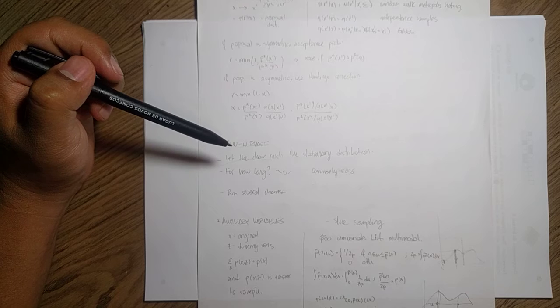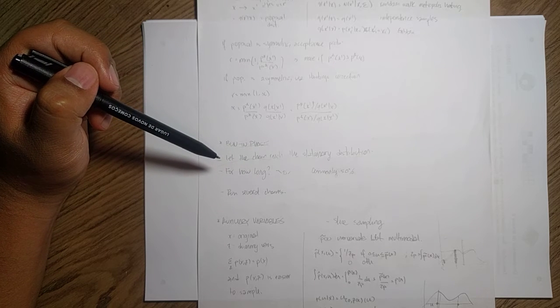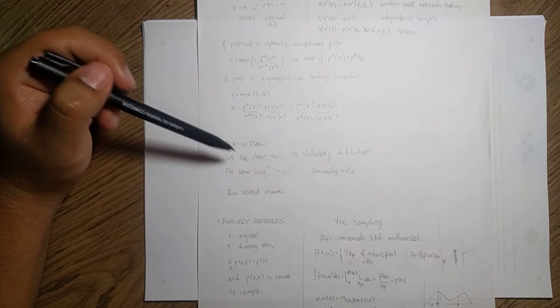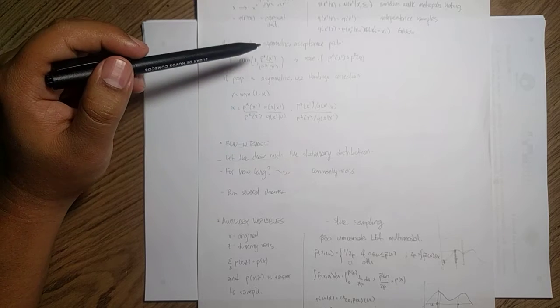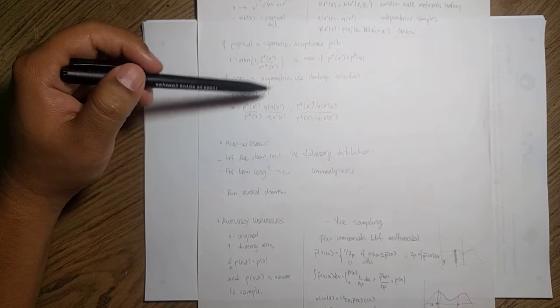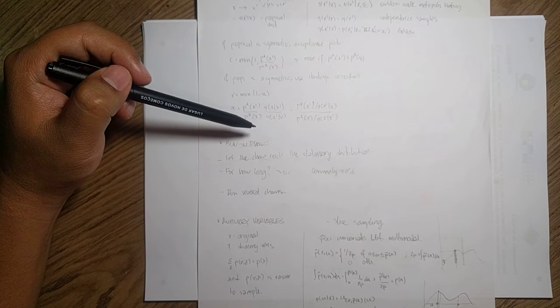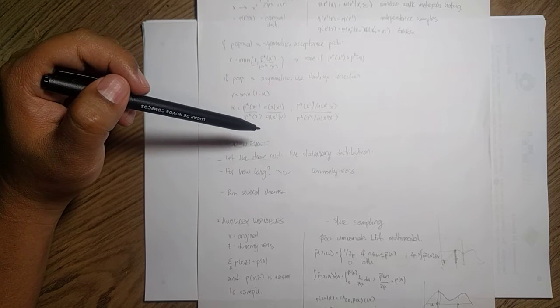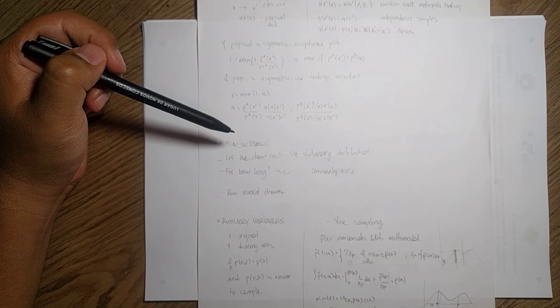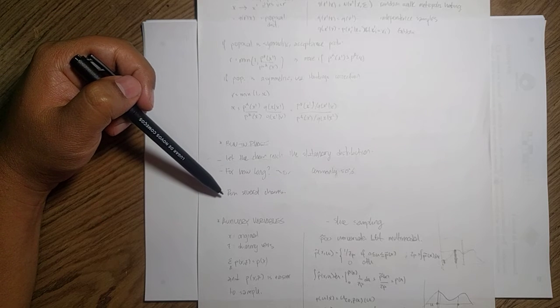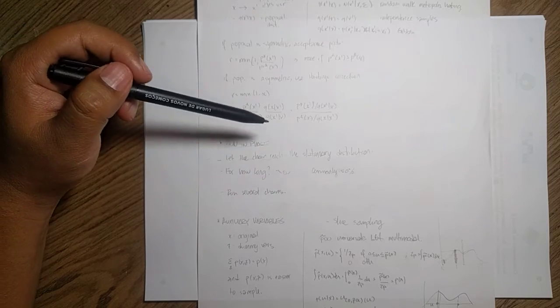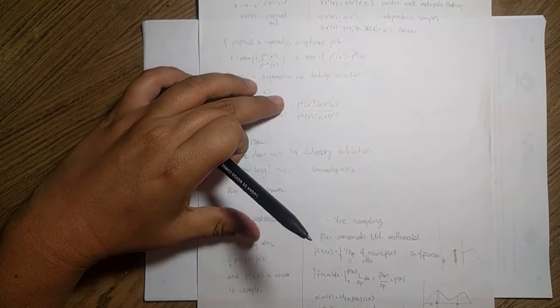For how long? Well, that is kind of a hard question to answer, but commonly we just use 50% of the chain. So let's say like, if you said that you are going to run these for a hundred thousand iterations, then you just take the 50,000 later samples to arrive to that particular number that you are interested in, but it's really hard to tell for how long should you run it. The other approach to take is to run several chains. And so instead of running just seeing a single one, you do several iterations and then use, you take the samples from them.